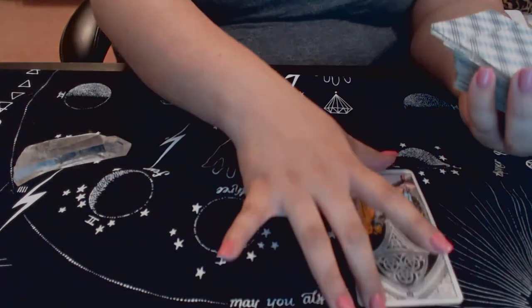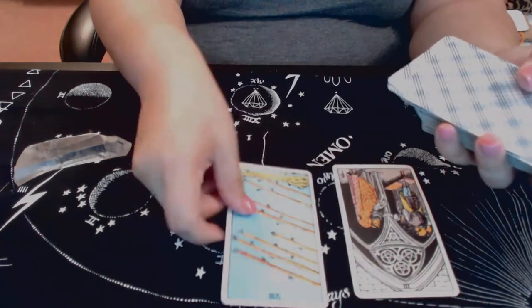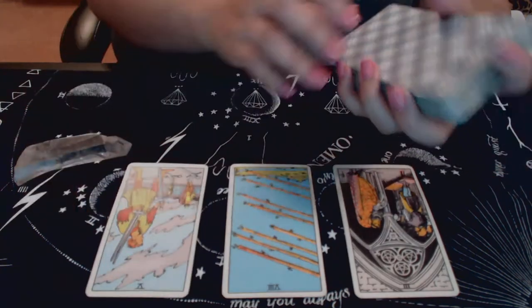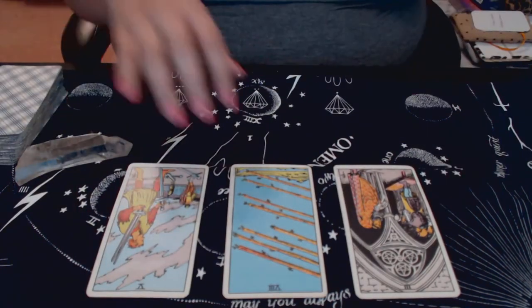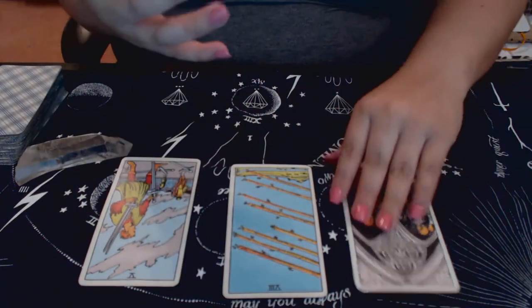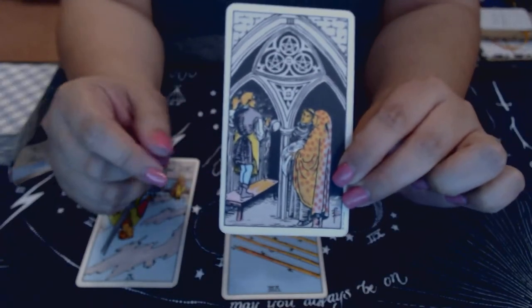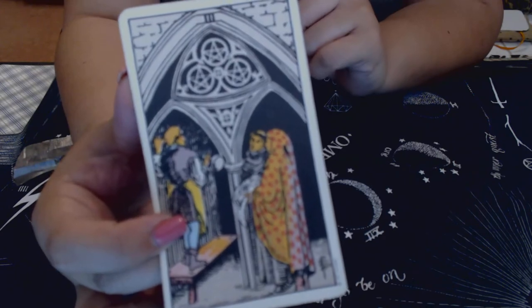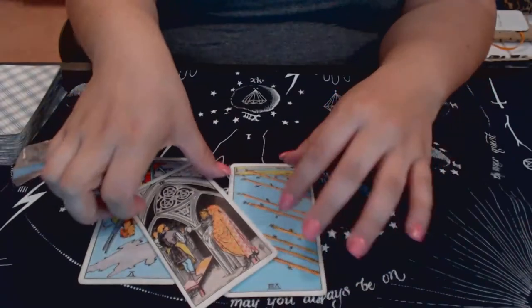So we have the three of pentacles, the eight of wands, and the five of swords. Yeah, so definitely I'm seeing that the process of it is in the works. People are working at it. Technical difficulties, I may not be the only one. So that's a good thing to see.